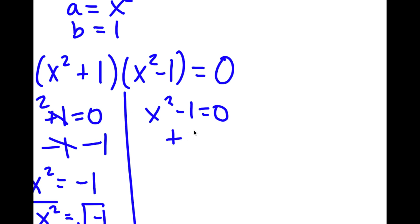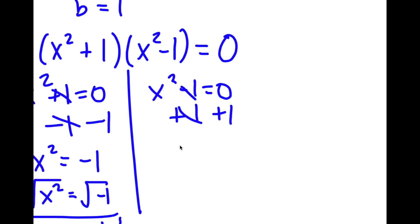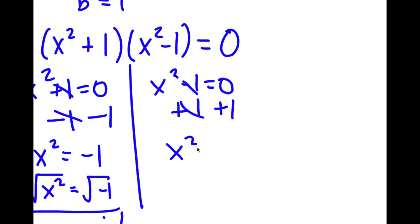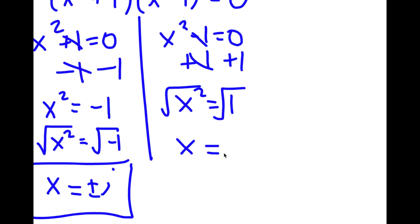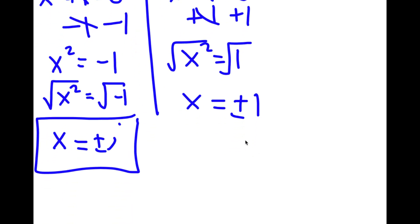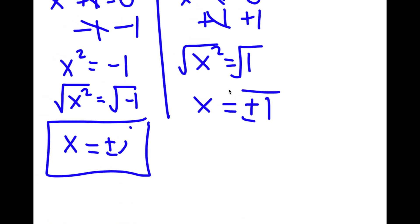For x squared minus 1 equals 0, I'm going to add 1 on both sides, so I get x squared is equal to 1. Taking the square root, I get x is equal to positive or negative 1. So that gives me two more solutions, for a total of four solutions to this problem.